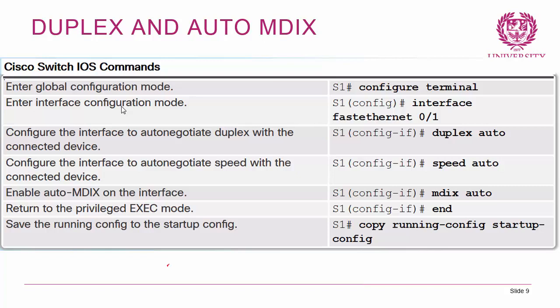The Auto-MDIX feature has been around a long time. Recall from the previous course that crossover cables are needed between devices at the same OSI layer (switch to switch), while straight-through cables are used between devices at different layers (switch to computer). With Auto-MDIX enabled on a device you don't have to worry about cable types. You enable it with 'mdix auto', but this is most commonly the default.